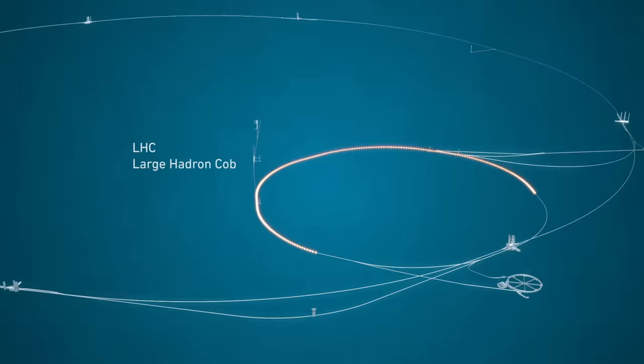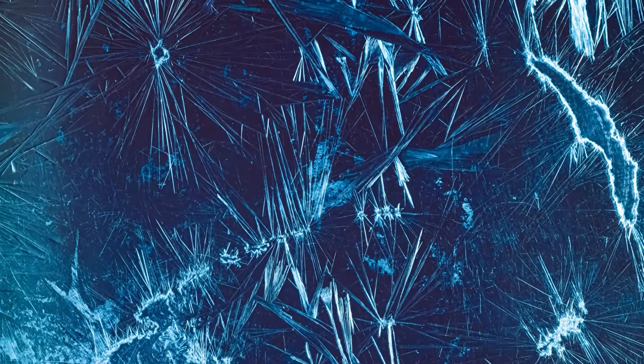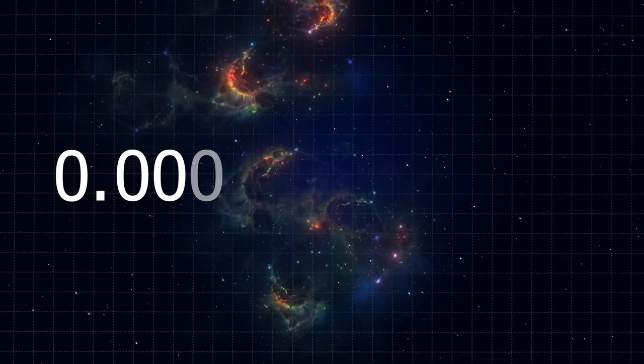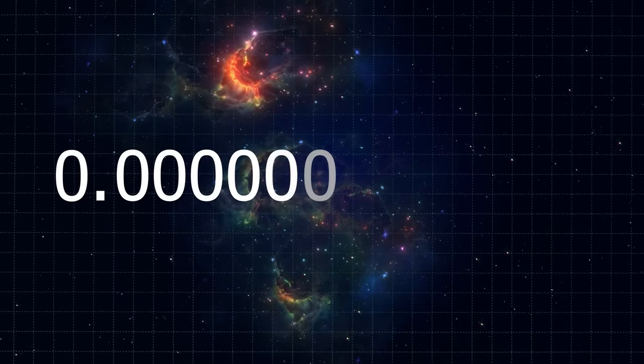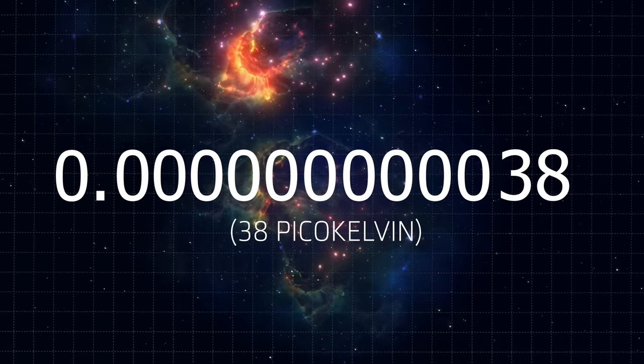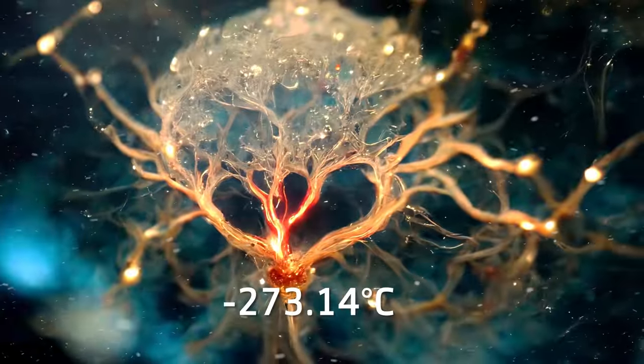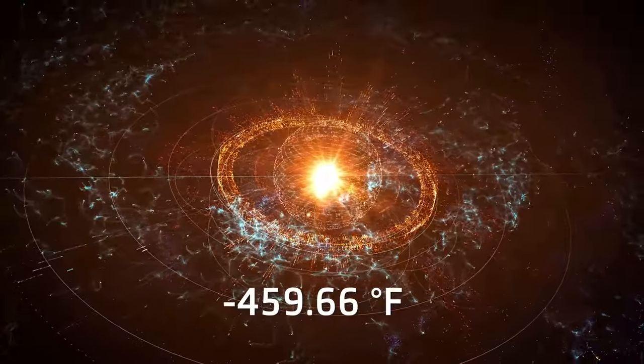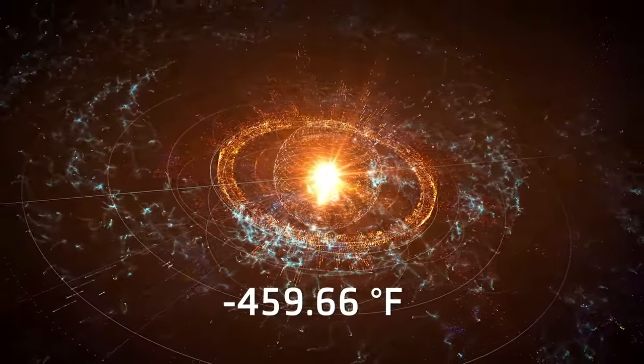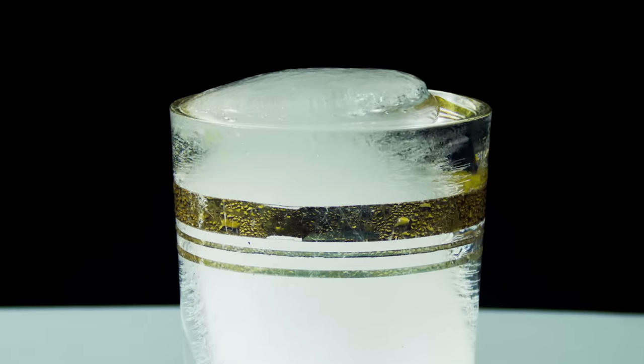The highest temperature scientists obtained at the Large Hadron Collider is 5 trillion Kelvin. The lowest temperature that people managed to obtain is 0.00000000038, 38 picokelvin, or minus 273.14 degrees Celsius, or minus 459.66 degrees Fahrenheit. But is there anything else hotter or colder?